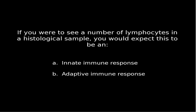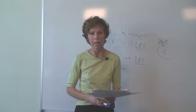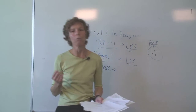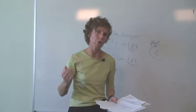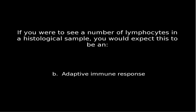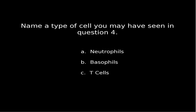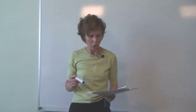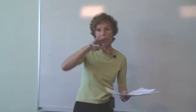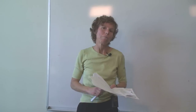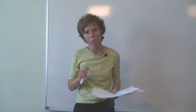Question four: If you see a number of lymphocytes in a histological sample, would this be an innate or adaptive immune response? When we say lymphocyte, we think B cells and T cells — which are part of the adaptive immune system. So straight away, we know that's going to be adaptive. Question five asks you to name a type of cell from question four — the correct answer is T cells. Neutrophils are phagocytic cells, and basophils are leukocytes but not lymphocytes.